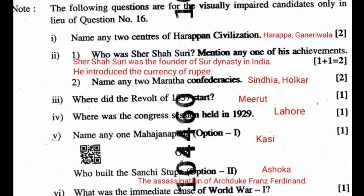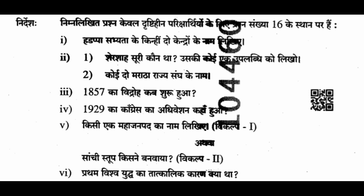The following questions are for visually impaired candidates only, in lieu of Question 16. (1.1) Name any two centres of Harappan civilisation: Harappa and Mohenjo-daro. (1.2) Who was Sher Shah? Mention any one achievement: Sher Shah was the founder of the Sur dynasty in India; he introduced the currency of the rupee. (2.2) Name any two Maratha confederacies: Sindhia and Holkar. (3) Where did the Revolt of 1857 start? Meerut. (4) Where was the Congress session held in 1929? Lahore. (5) Name any one Mahajanapada: Kashi. Or: Who built the Sanchi Stupa? Ashoka. (6) What was the immediate cause of World War I? The assassination of Archduke Franz Ferdinand.